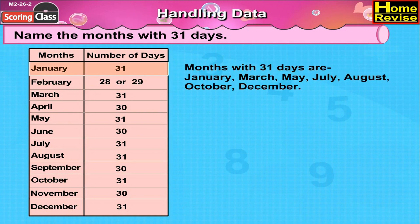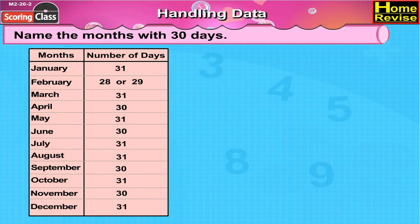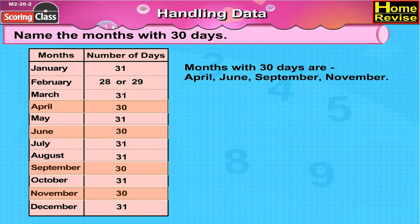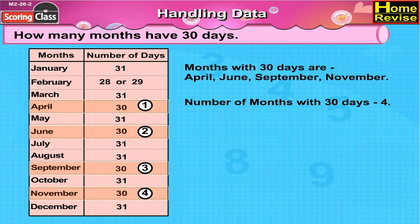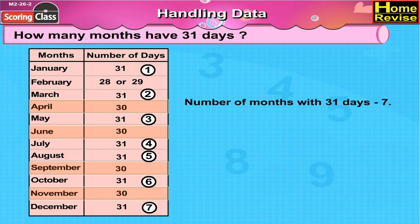Name the months with 31 days. The months with 31 days are January, March, May, July, August, October and December. Name the months with 30 days. The months with 30 days are April, June, September and November. How many months have 30 days? They are 4 — so 4 months have 30 days. How many months have 31 days? They are 7 — so 7 months have 31 days.